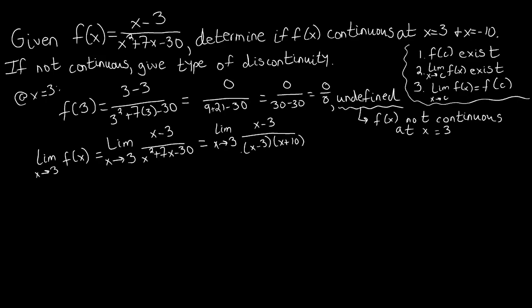We see that (x-3) appears in both the numerator and denominator as factors of multiplication, so we can divide them out. Our limit becomes the limit as x approaches 3 of 1/(x+10). Passing to the limit by plugging in 3 gives us 1/(3+10) = 1/13, which is a real number. So the limit as x approaches 3 exists, but the value of our function at 3 is undefined. When the limit exists but f(c) is undefined, we have a removable discontinuity.